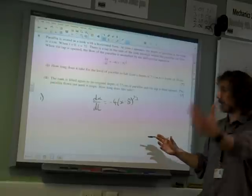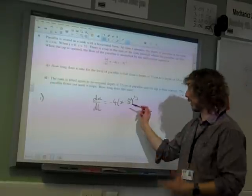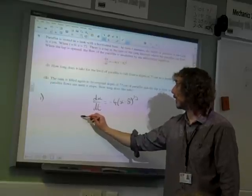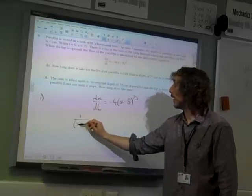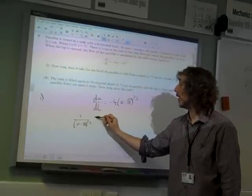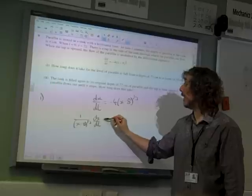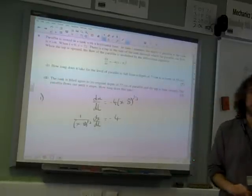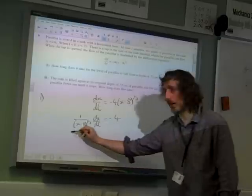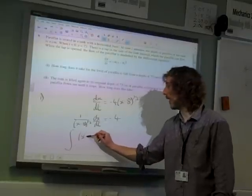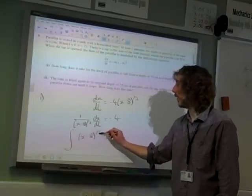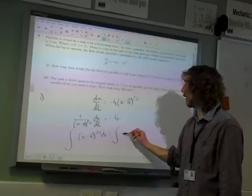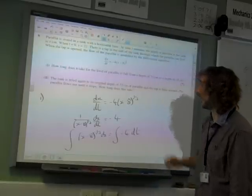Get the x's onto the left and the t's onto the right. We haven't got any t's. But that is 1 over (x minus 8) to the third. dx by dt is minus 4. There's our first move. Now we can integrate. So we're doing the integral of (x minus 8) to the minus 1 third dx is the integral of minus 4 dt.